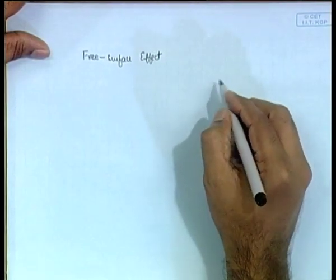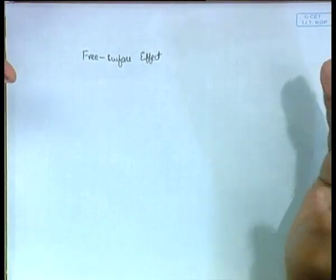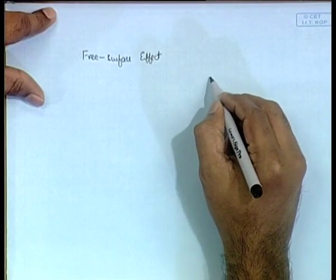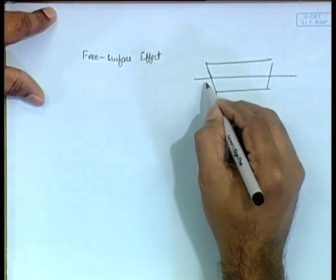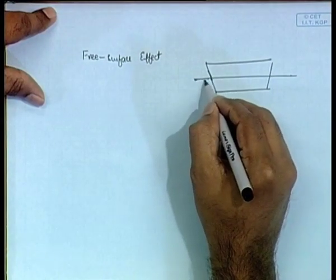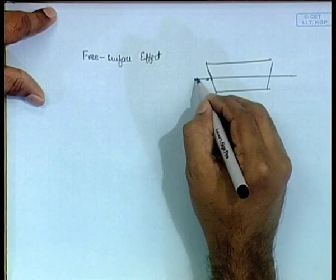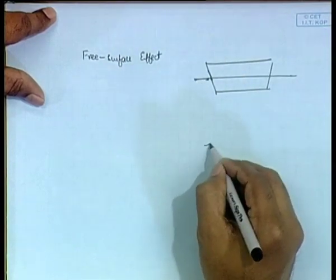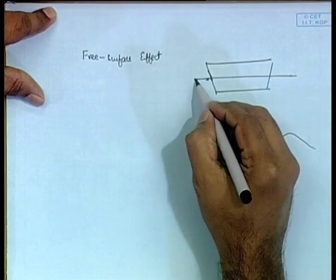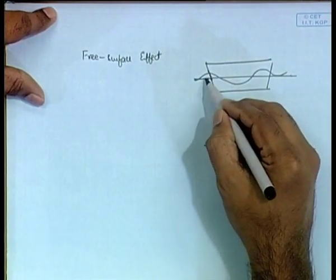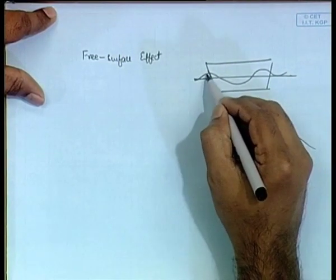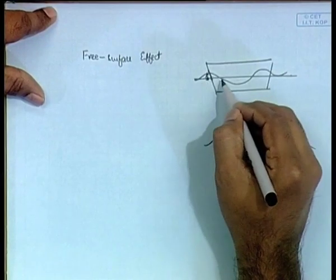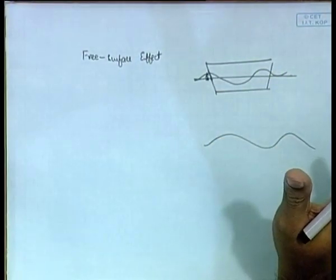Free surface effect means the effect of the air-sea interface — we have talked about a water line. When you have a ship, this water line has a movement of its own. For example, when a wave passes through it, the free surface will become like this — it is not a straight line. When studying the effect, such as the speed with which the wave is moving or the displacement of this free surface from the mean position, that study is called free surface effect in hydrodynamics terminology.